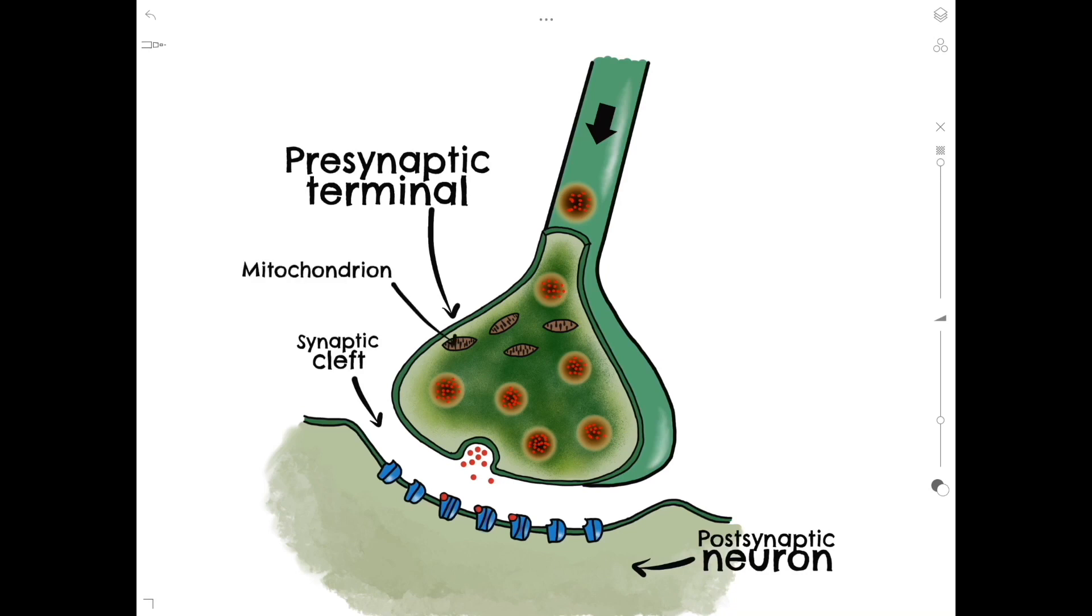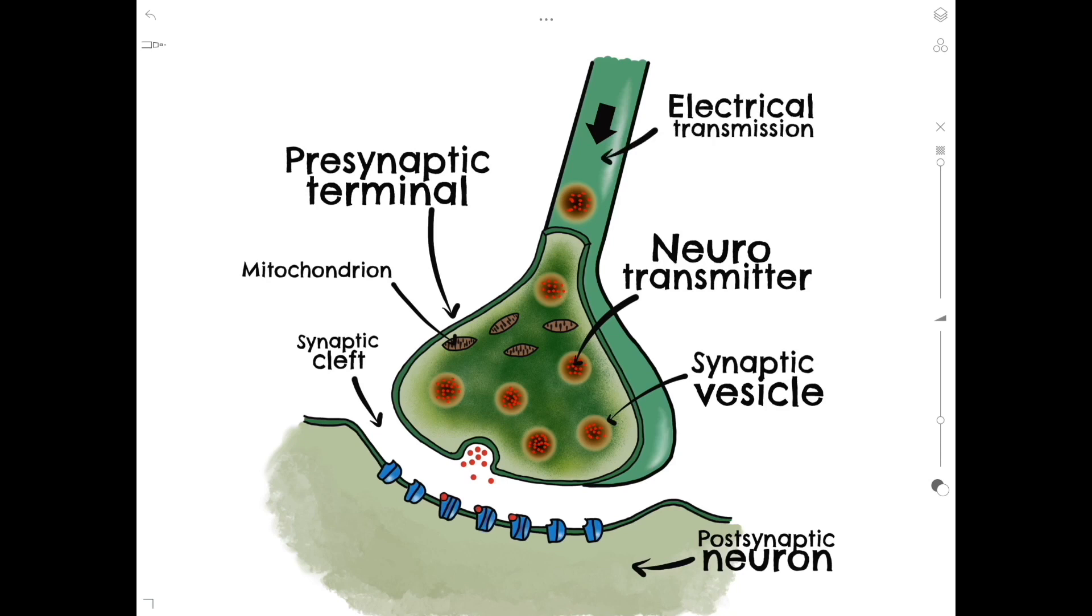Neurotransmitters are stored in synaptic vesicles within the presynaptic cell. As an action potential travels through the neuron, it facilitates an influx of calcium ions into the cell. These calcium ions then instigate the fusion of synaptic vesicles with the plasma membrane of the presynaptic cell.